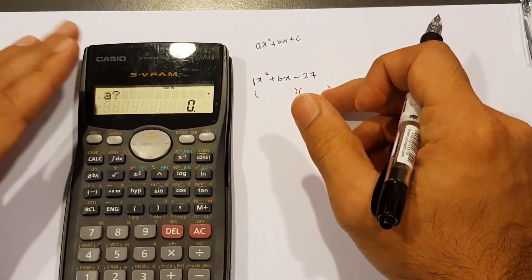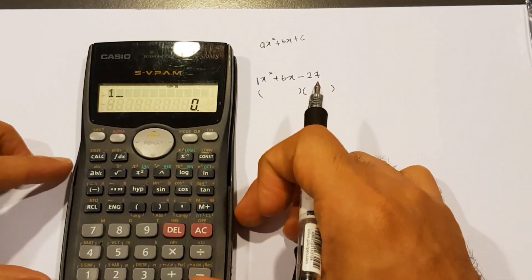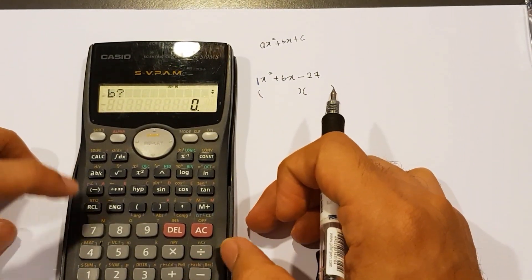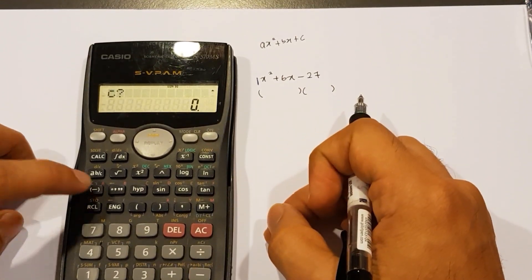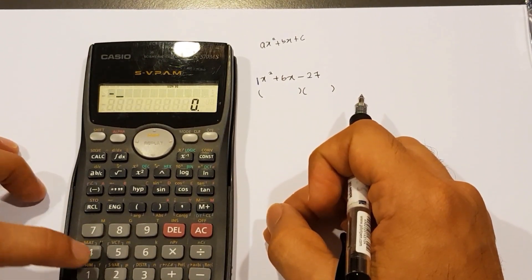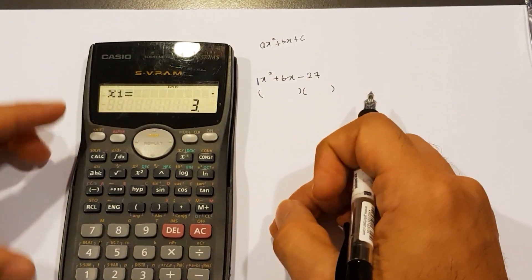So let's tap those numbers into the calculator. A number is 1. Let's press equal. B number is 6. Again, equal. C number is negative. Don't forget negative. And then 27. And then go ahead and tap equal.